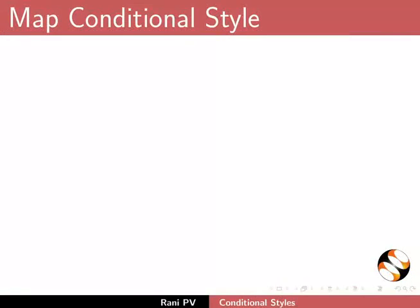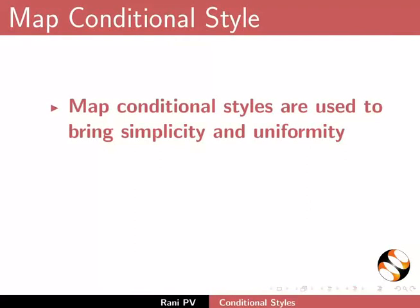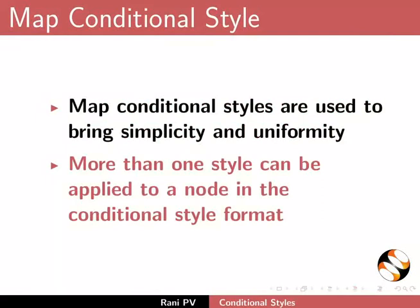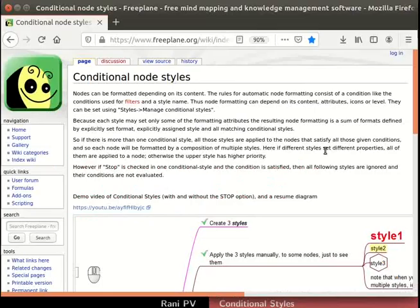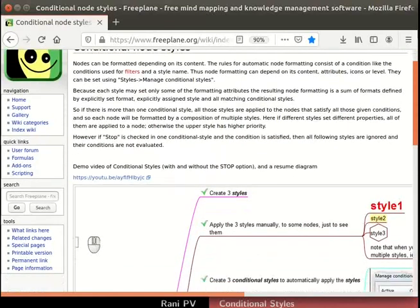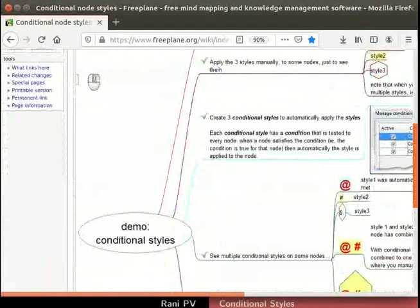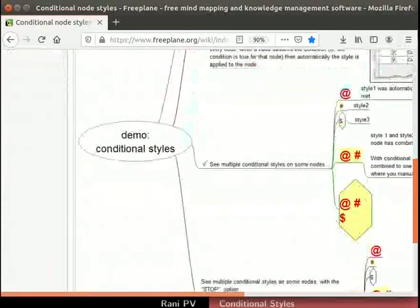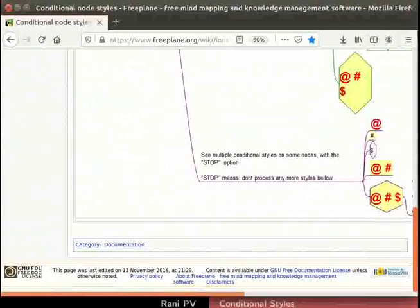Let's learn about map conditional styles. Map conditional styles are used to bring simplicity and uniformity. More than one style can be applied to a node in the conditional style format. This Freeplane webpage shows examples on applying multiple styles on the node. Learner can practice this using the examples given in the website.